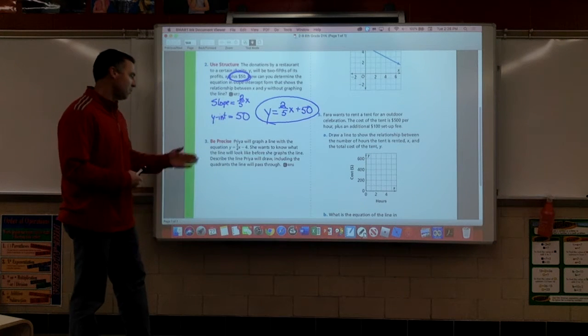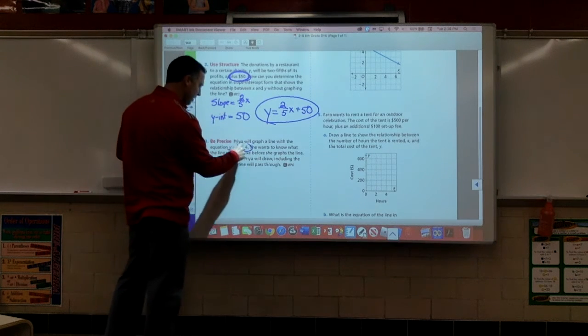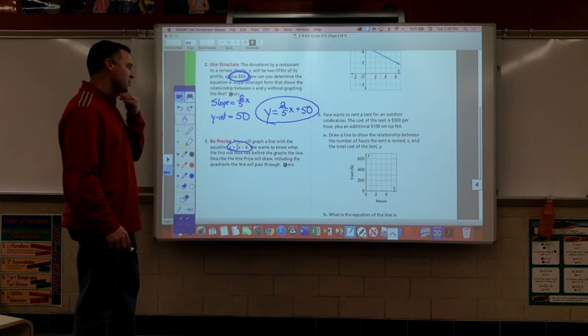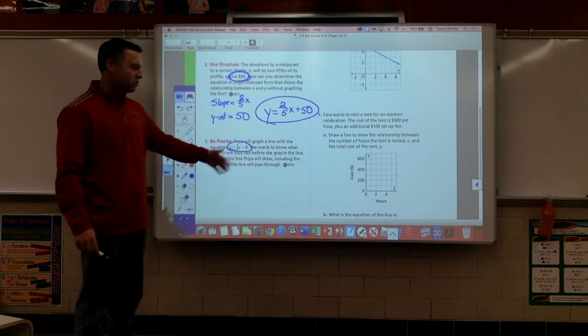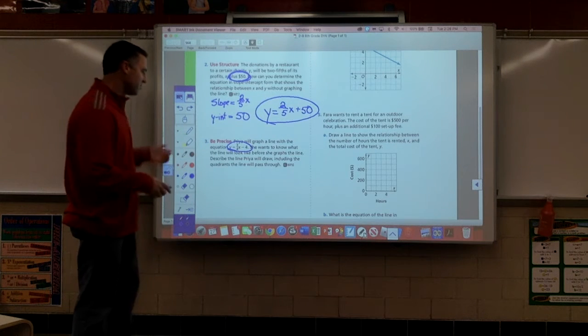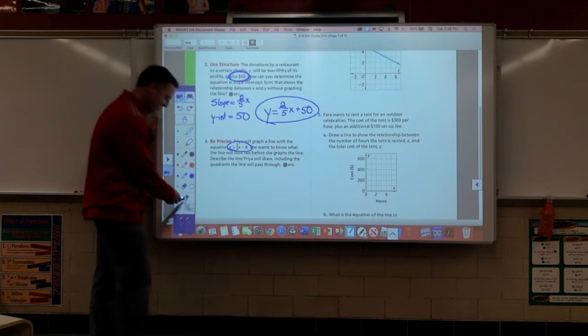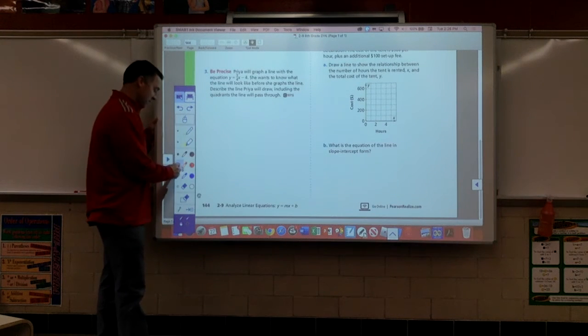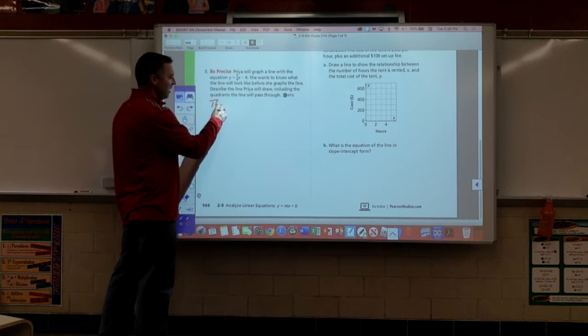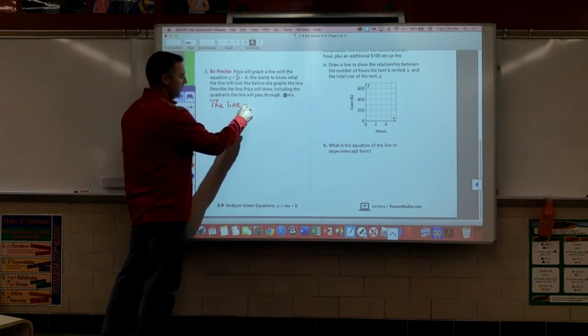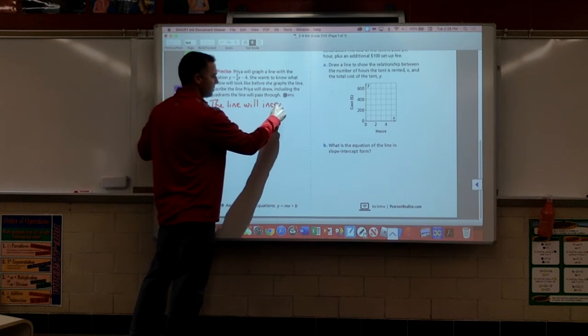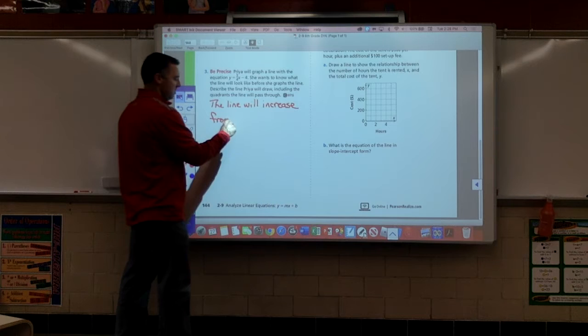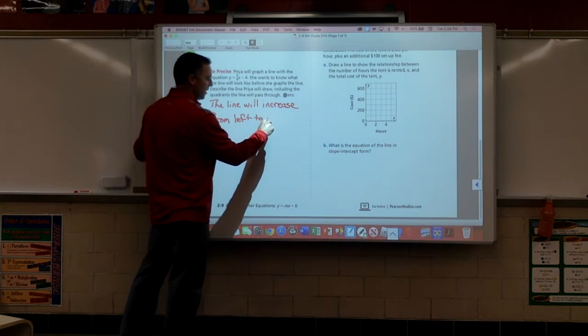Priya will graph a line with the equation. She wants to know what the line will look like before she graphs the line. Describe the line Priya will draw, including the quadrants the line will pass through. Oh, man. That's a doozy. Well, I'm going to say the line will increase from left to right.